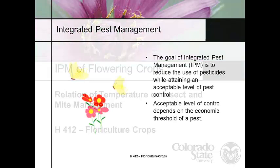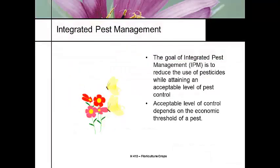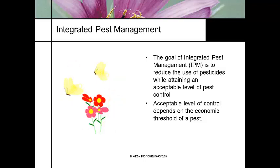Integrated pest management — this is a continuation of what we talked about two weeks ago. Integrated pest management is the idea of reducing pesticides while attaining an acceptable level of pest control. When I use the word pesticide, I'm including conventional and organic pesticides in the same context, because a pesticide is a pesticide. There are still poisons. This does not include biocontrol, but biocontrol includes the idea of pest management.